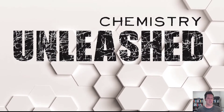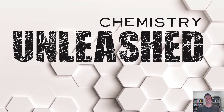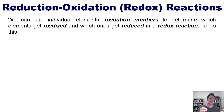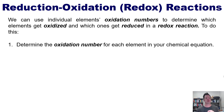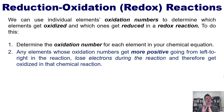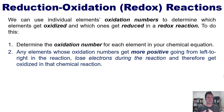We can use individual elements' oxidation numbers to determine which elements get oxidized and which ones get reduced in a redox reaction. To do this, we first determine the oxidation number for each element in the chemical equation. Any elements whose oxidation numbers get more positive as you go from left to right are the elements that lose electrons and therefore get oxidized.